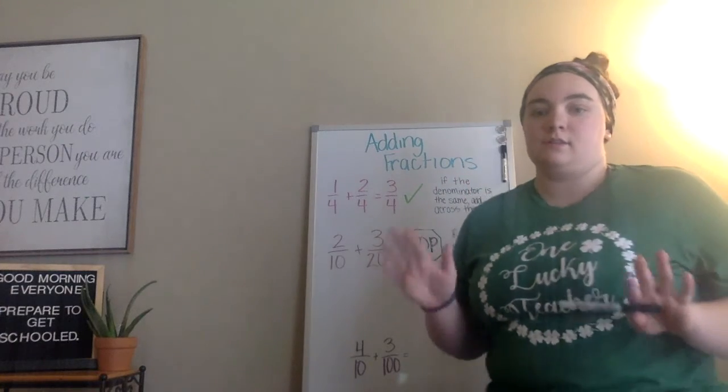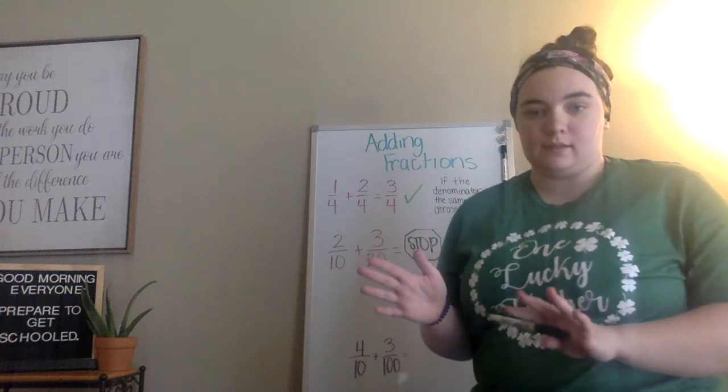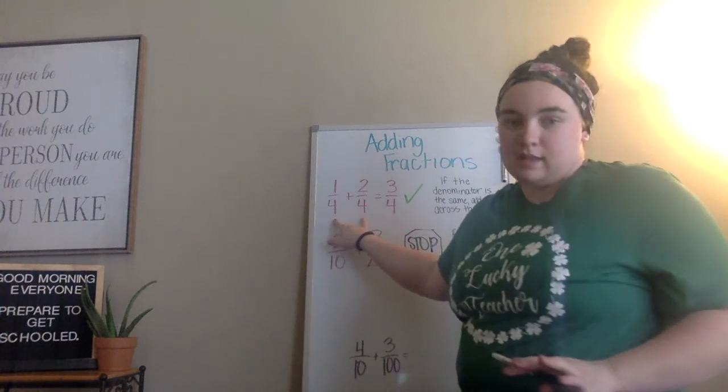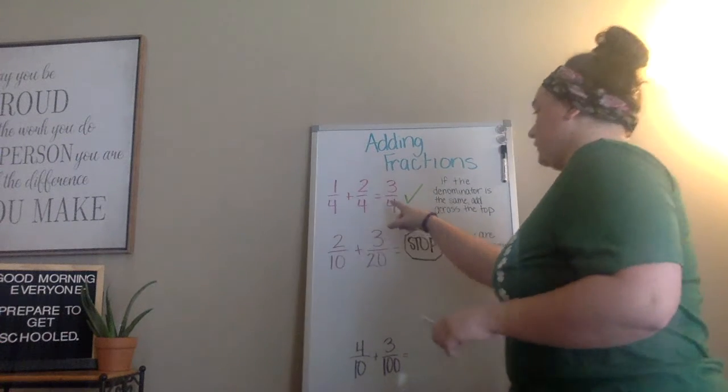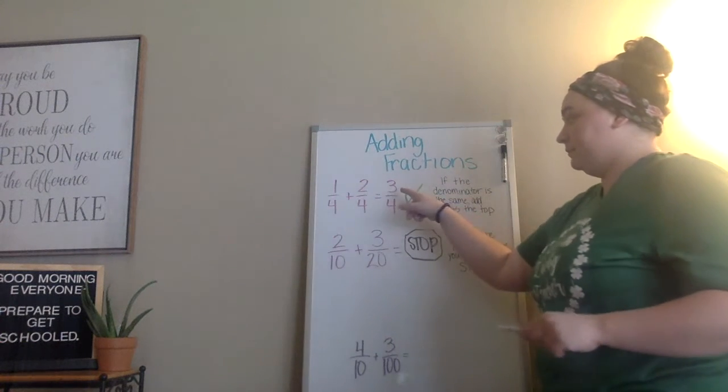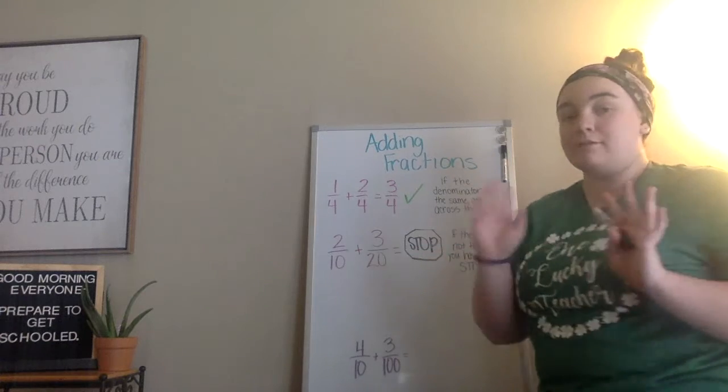Let's talk adding fractions. So if we add fractions, there's a couple different ways we have to think about this. If your denominators are the same, like one fourth and two fourths, you're good to go. All you have to do is add across the top. But if your denominators are not the same, you have to stop.